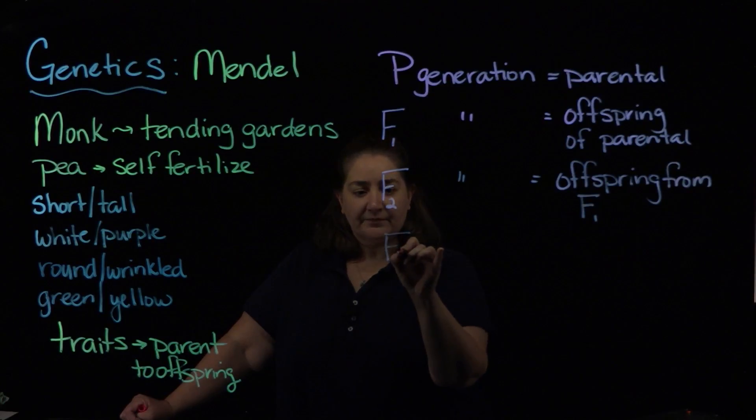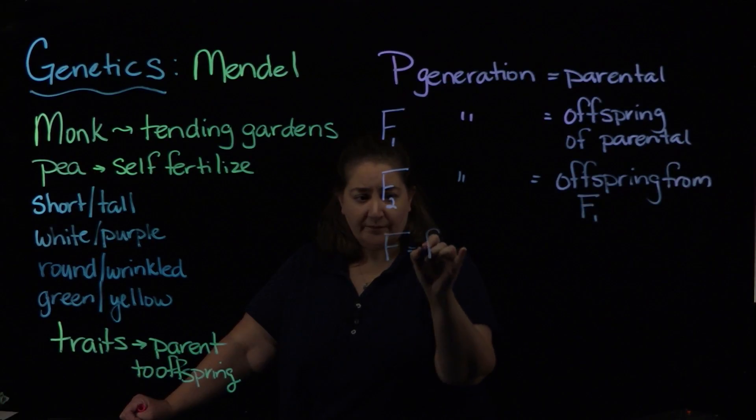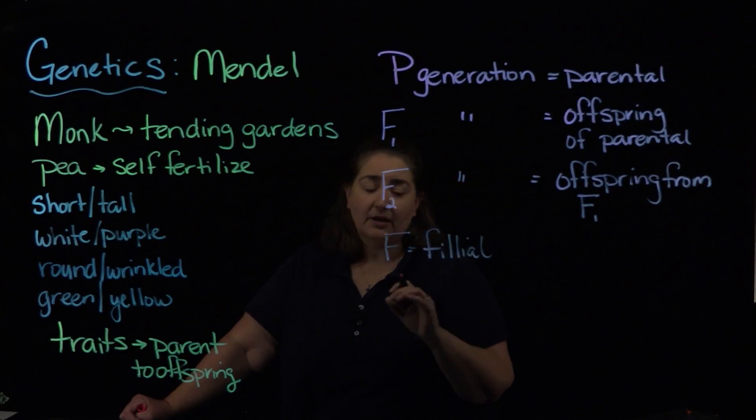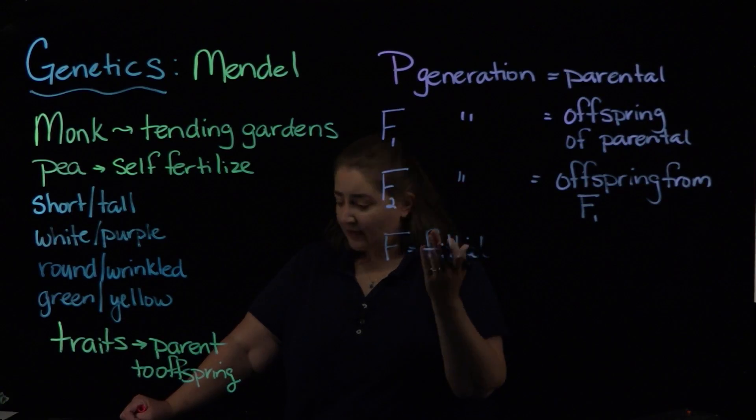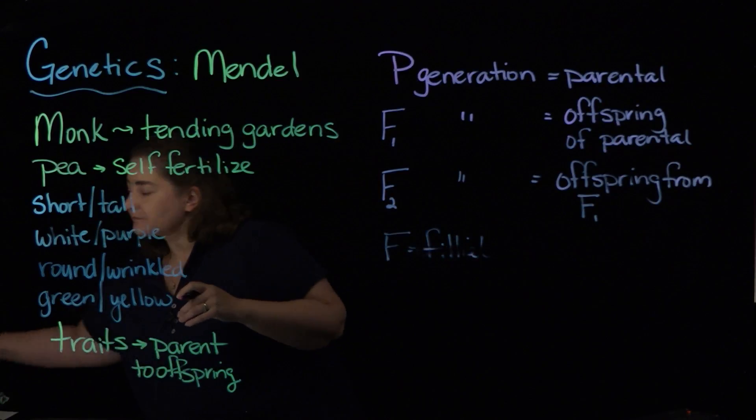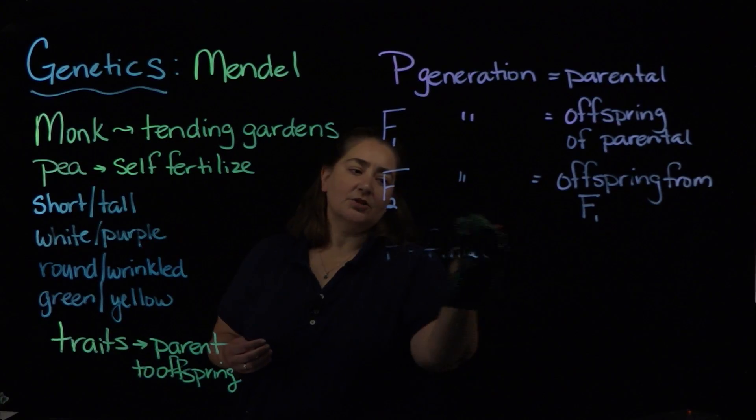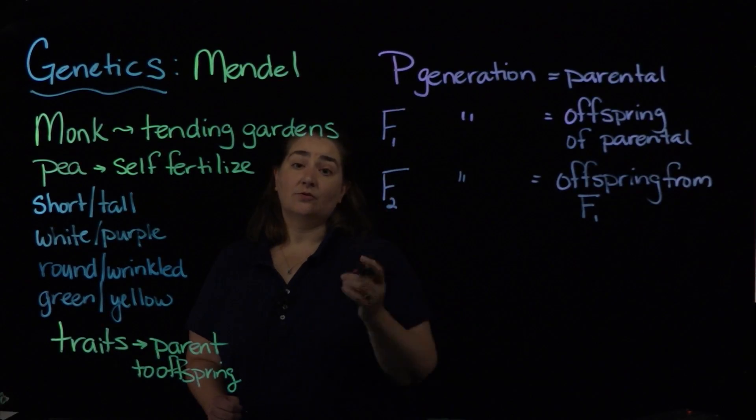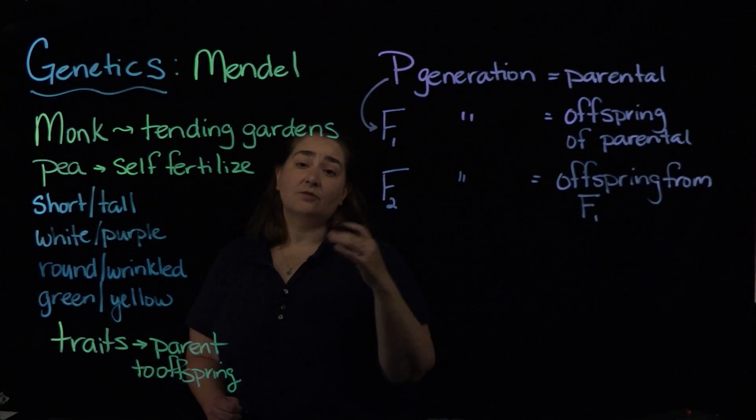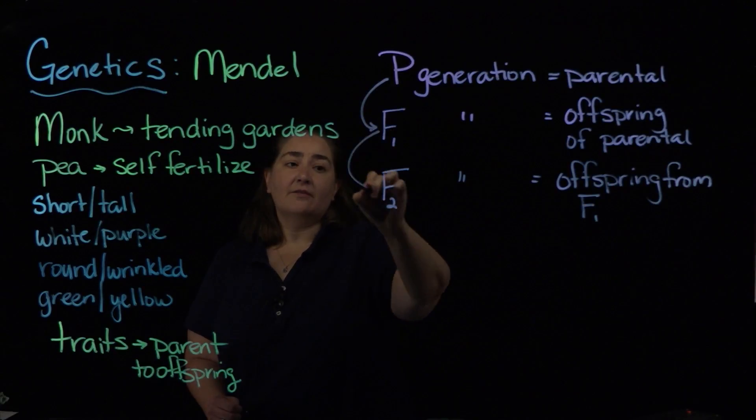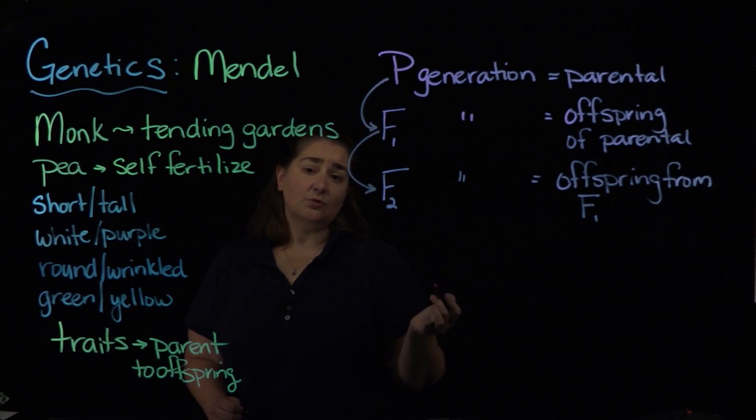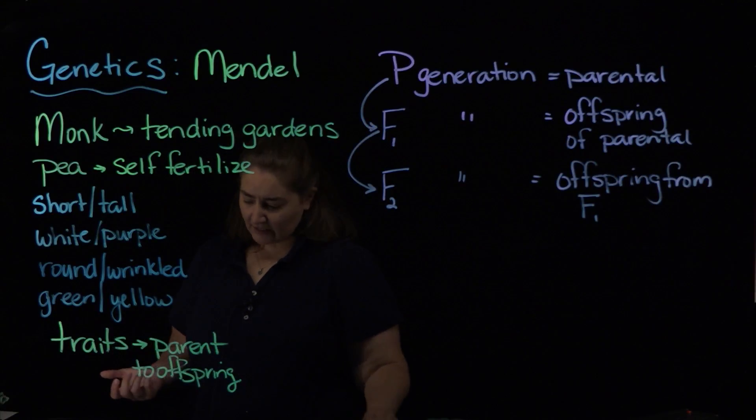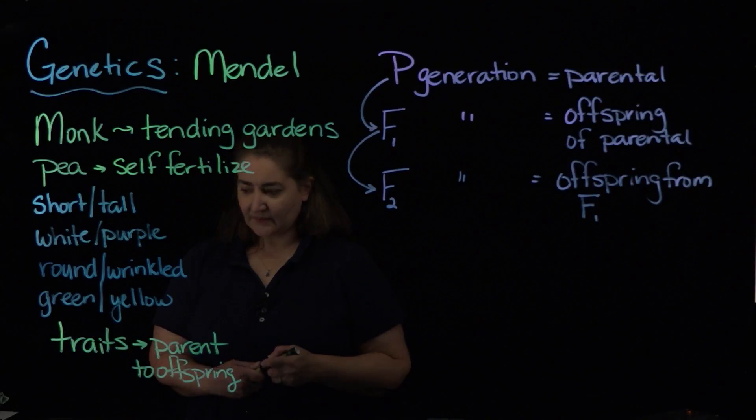And what that F stands for is filial. But I'm not going to really have you worry about that too much, as long as you know where the sequence goes. P generation is going to give us the F1, F1 gives us the F2. So keep that in mind as far as our genetic crosses.